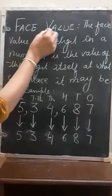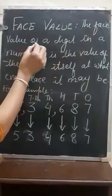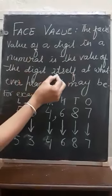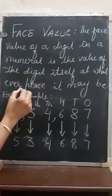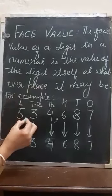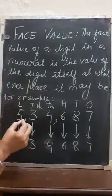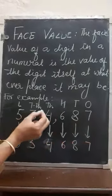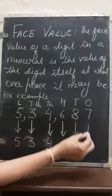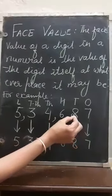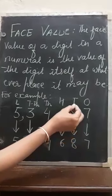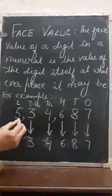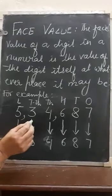Face value: the face value of a digit in a numeral is the value of the digit itself, at whatever place it may be. For example, in the numeral 5,34,687 — the face value of 7 is 7, of 8 is 8, it doesn't matter it's on the tens place. 6 is 6, 4 is 4, 3 is 3, and 5 is 5. No change regarding the place.